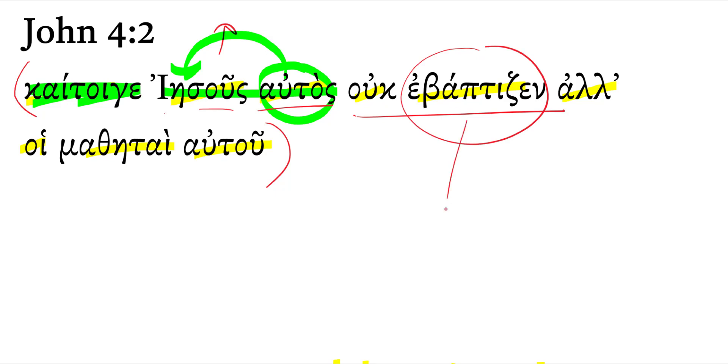That baptizin is, of course, the imperfect form of baptizo. The lexical form there is baptizo. You can see there's an augment. There's no sigma that's come in there, no theta, anything like that. That's just the regular imperfect ending.